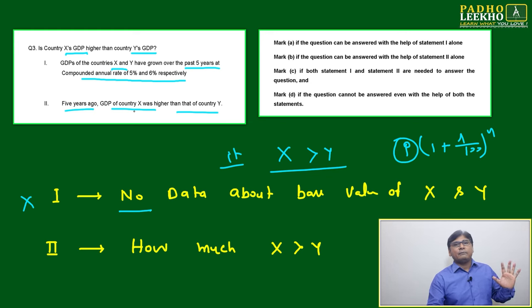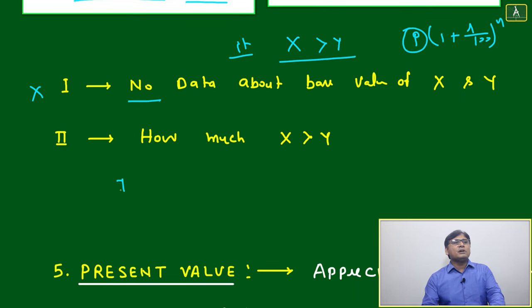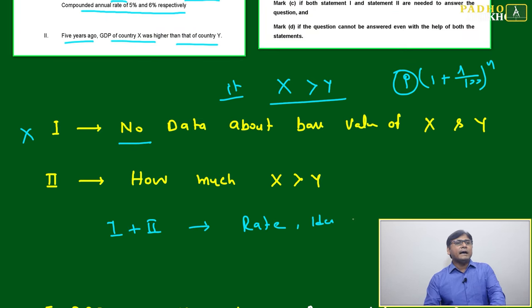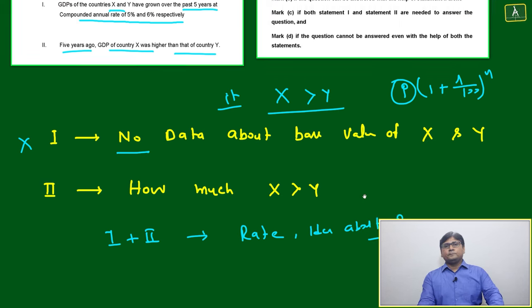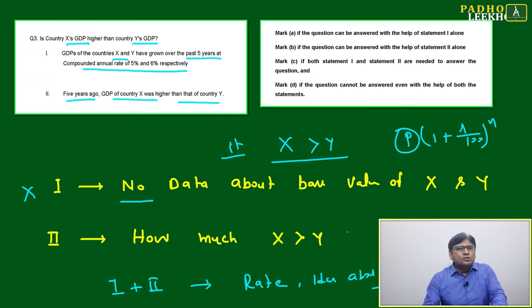Now if you merge statements one and two, when you're merging one and two, then what is happening? You got the rate, you got idea about P for both. Then based on that, it looks like we should be able to give the answer if you are combining one and two.